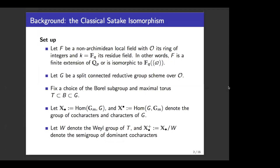Before talking about the Geometric Satake Equivalence, which is an equivalence between two monoidal categories, let's look at the classical Satake isomorphism. We make a few assumptions. Let's say F is a non-archimedean local field, and as usual, we write O for its ring of integers and K for its residue field. You can think of F as either an extension of Q_p, or the field of formal power series with coefficients in F_q. In the former case, we say F is of mixed characteristic, while in the latter case, we say F is of equal characteristic. The names are justified by looking at the characteristics of this field and the characteristics of the residue field.